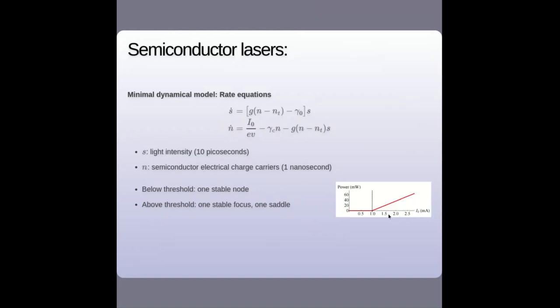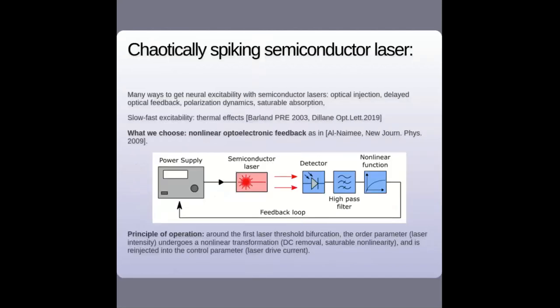There are many ways to bring lasers to behave like a neuron dynamically: optical injection, delayed optical feedback in specific regimes, polarization dynamics, saturable absorption — all can work. The specific kind of slow-fast excitability we're interested in can be achieved via thermal effects, which we studied many years ago and is still quite interesting. But we wanted something more controllable than thermal effects.